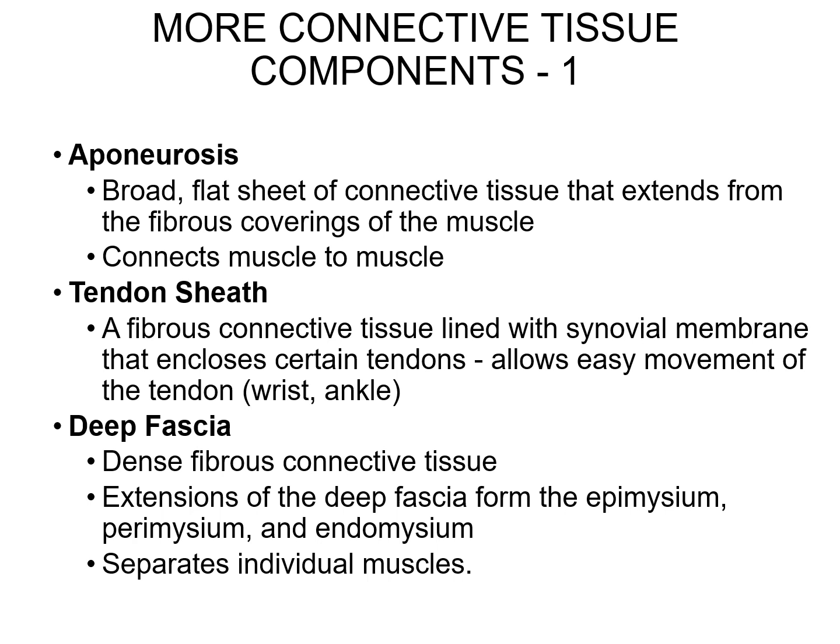Now some terms we have not discussed yet — new material. These are similar to tendons and the various mysiums and are made up of similar tissue. The first new definition is an aponeurosis: a sheet of collagen fibers connecting a muscle to another muscle. So we've had muscle to bone — tendon; bone to bone — ligament; and now muscle to muscle — aponeurosis. This is fairly rare in the body. The most common example is in the abdomen, connecting our abdominal muscles. You also have this in the scalp region, the palm of the hand, and the back of the knee.